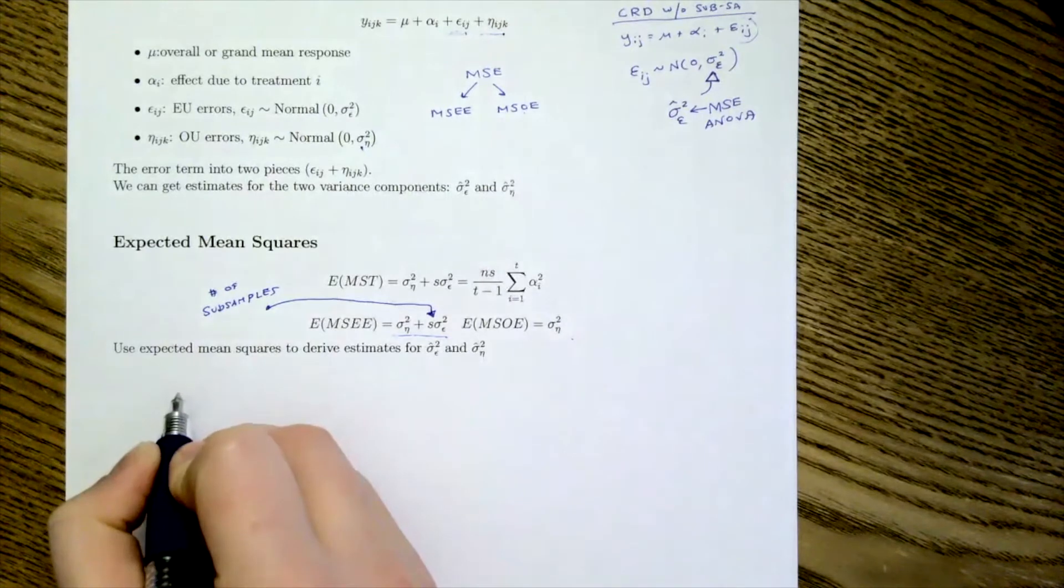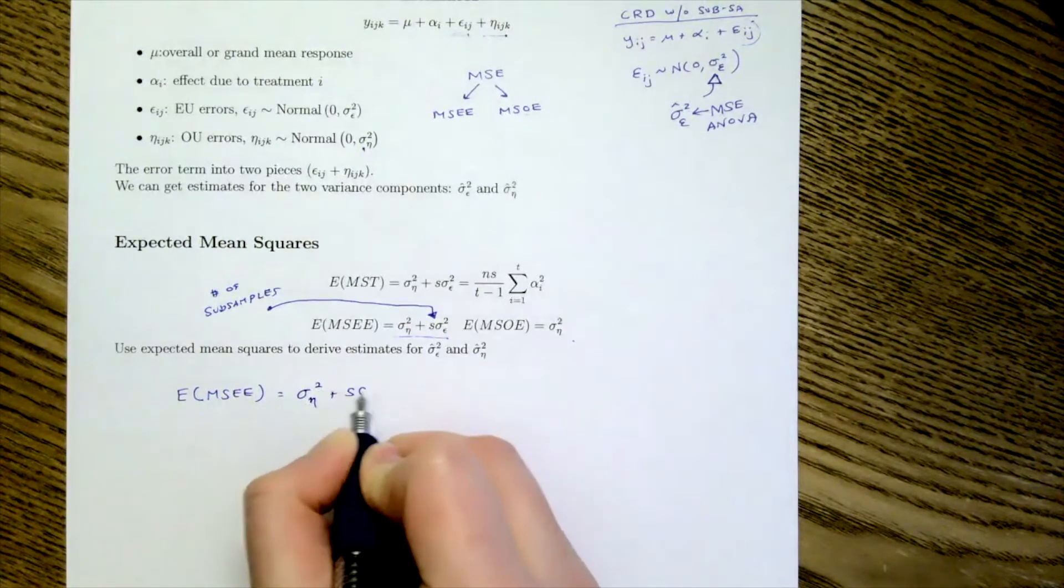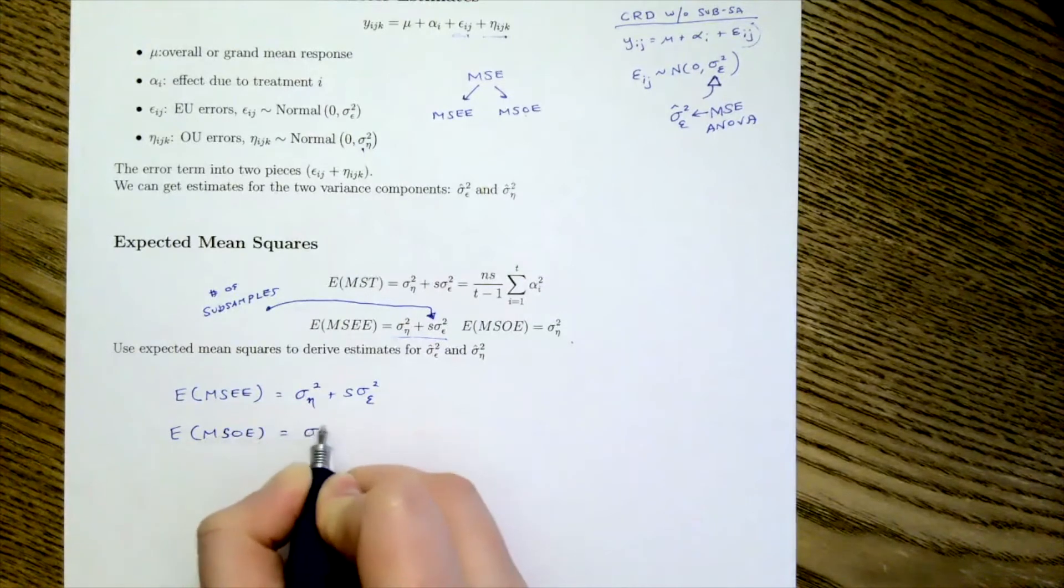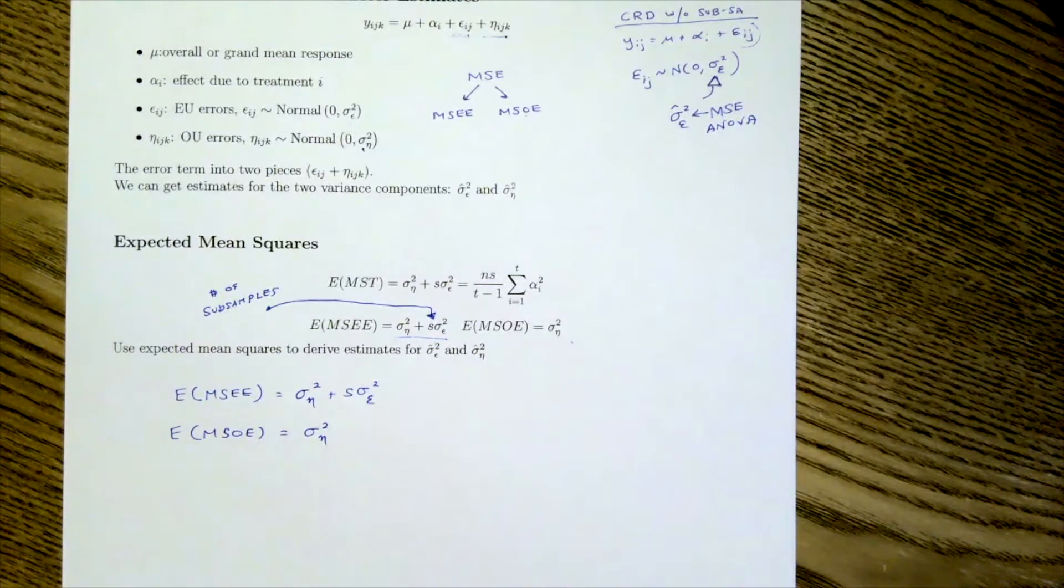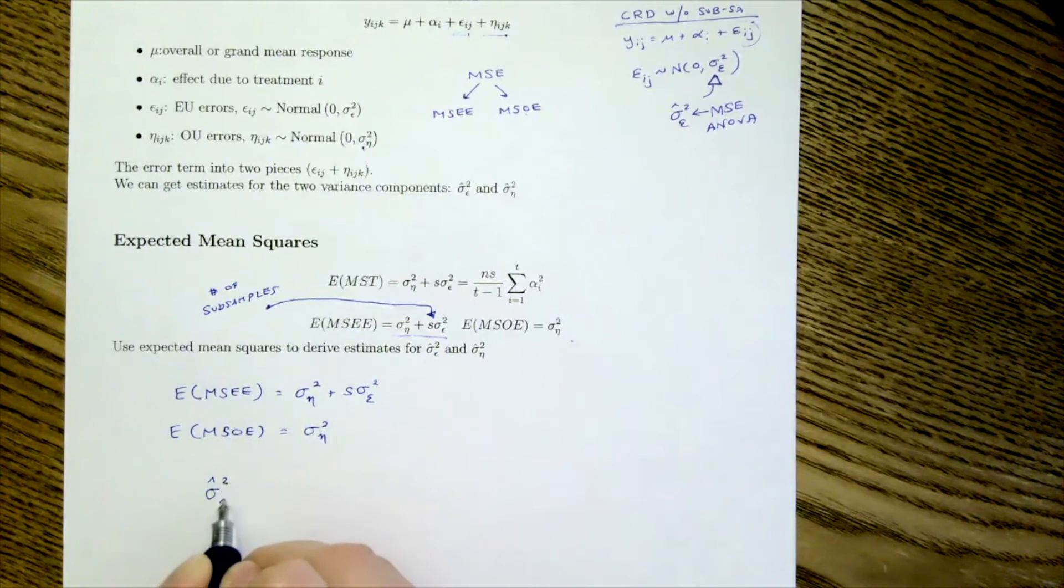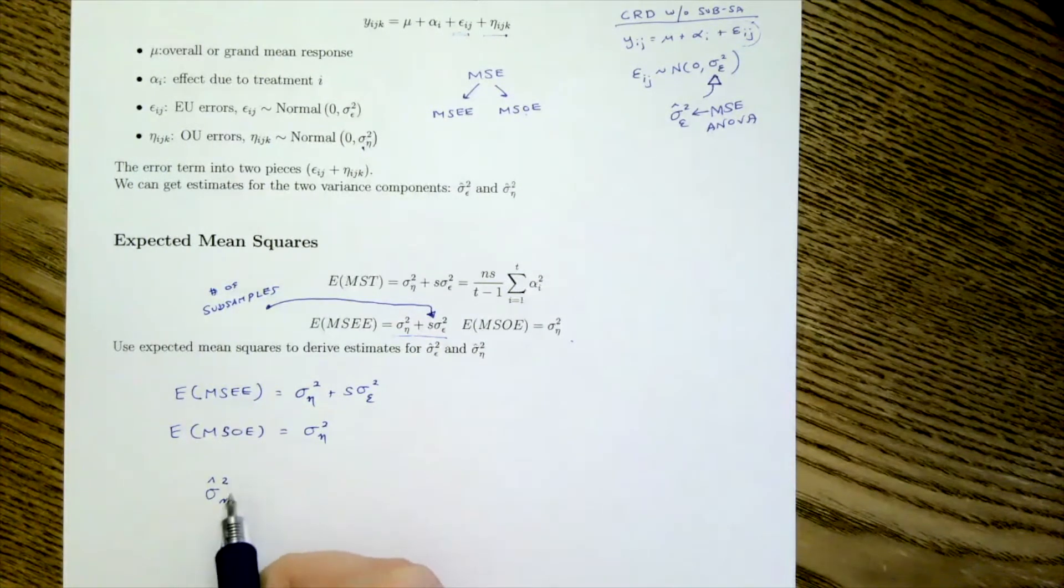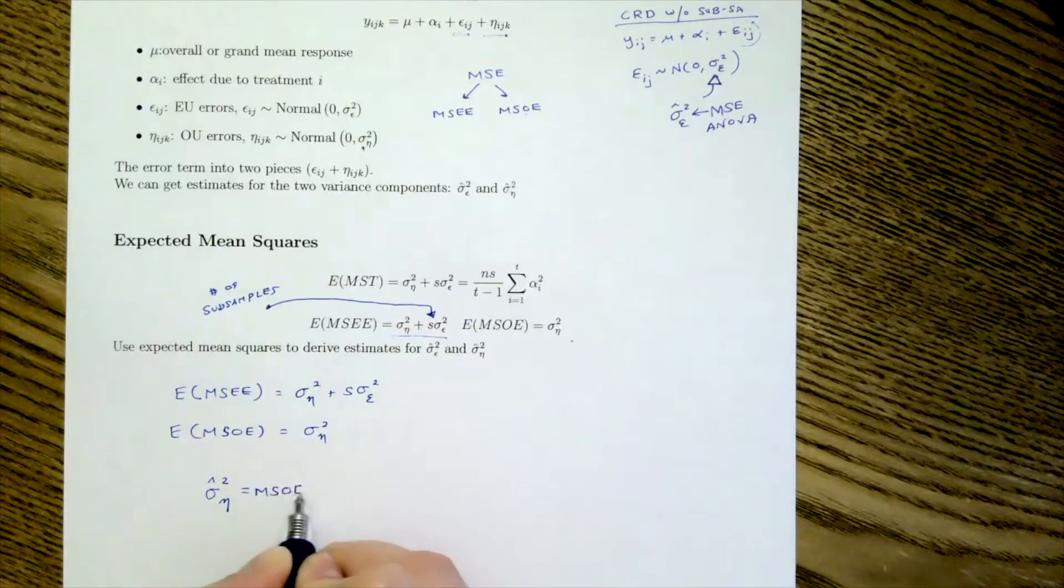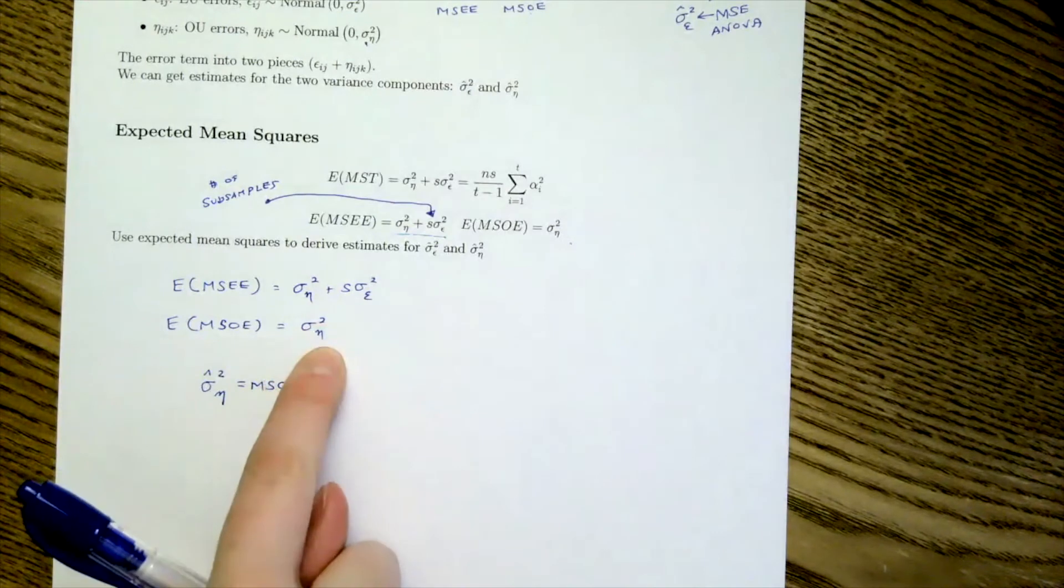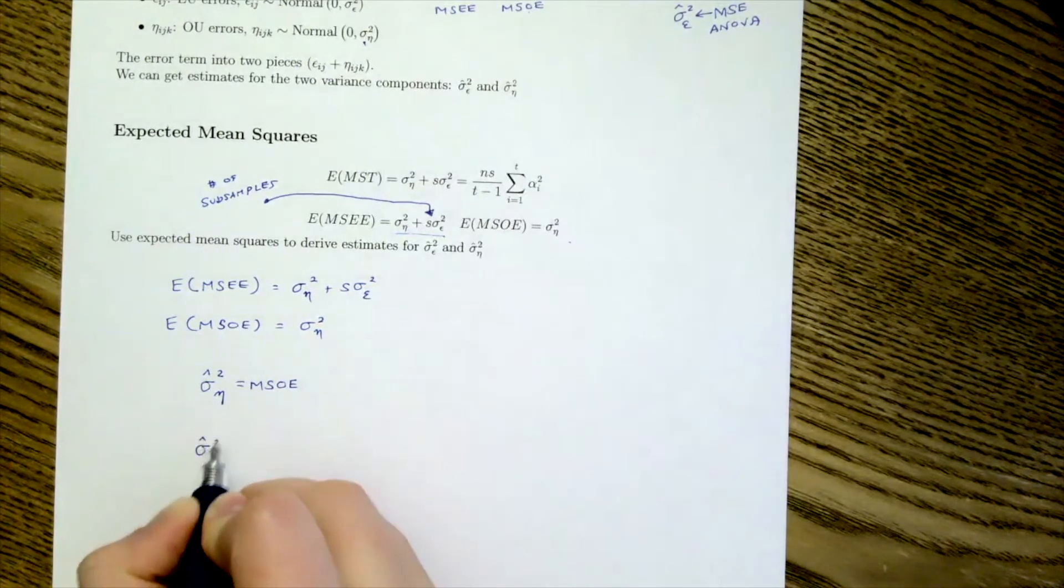So let's look at this. We know that the expected value of MSEE is equal to sigma squared eta plus S sigma squared epsilon. We know expected OE is sigma squared epsilon. So what this means is if we had an estimate for sigma squared eta, which we're going to denote as sigma hat squared eta, then we just drop the expected value here and we say our best estimate for the observational error is the MSOE. So this one is simple. So on average, we would expect the MSOE to be sigma squared eta. To estimate it, our best guess would be MSOE. But now what about sigma hat squared epsilon? What would this be?